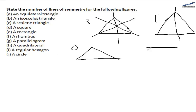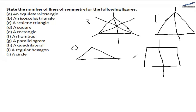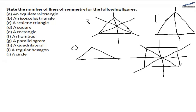For a square, where we have equal sides, we have one vertical, one horizontal, one first diagonal, and one second diagonal. So, there are four lines of symmetry.